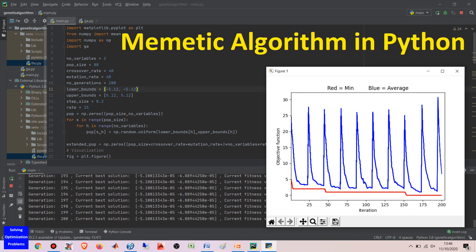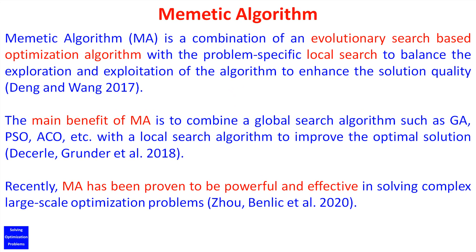Hello everyone and welcome. I'm going to show you and test my mimetic algorithm in Python. This is my innovative version of mimetic algorithm for global optimization, which has local search and multi-start mechanisms. Mimetic algorithm is a combination of an evolutionary search-based optimization algorithm with the problem-specific local search to balance the exploration and exploitation of the algorithm to enhance the solution quality.